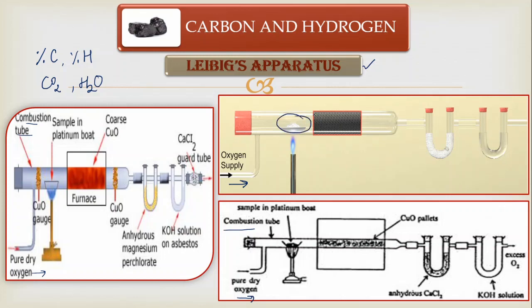The second important thing is obviously your sample. You can see the sample in each version shown here. Let's say I have to take coal as a sample and measure one gram — I'll take that coal sample in the dish here. Your aim is to heat it in the presence of oxygen so that combustion takes place. You can see the combustion chamber in all three versions.